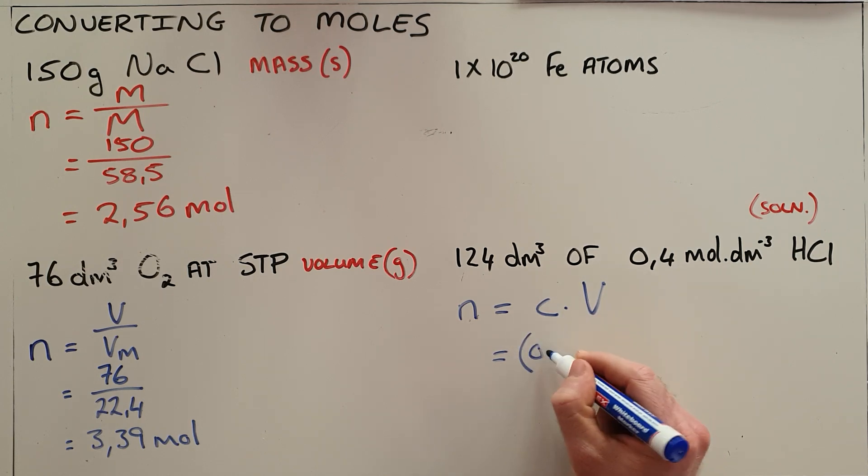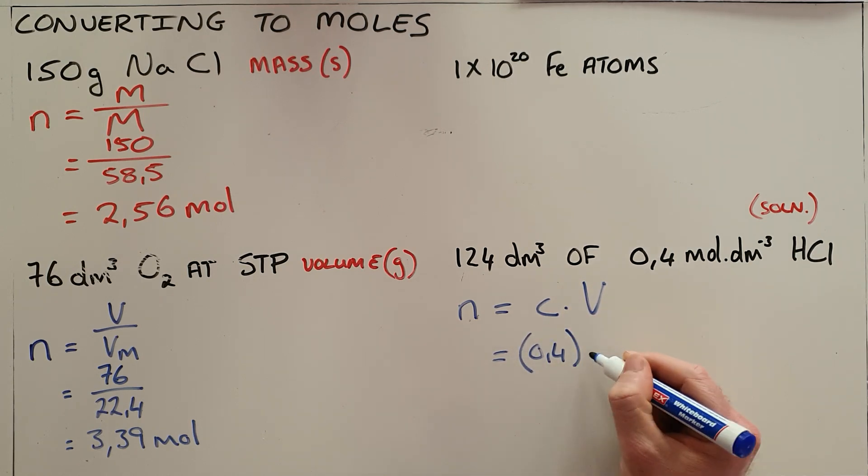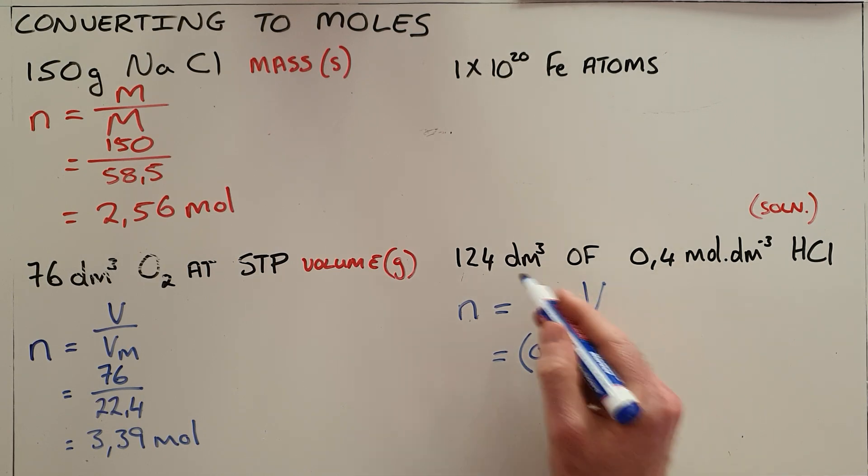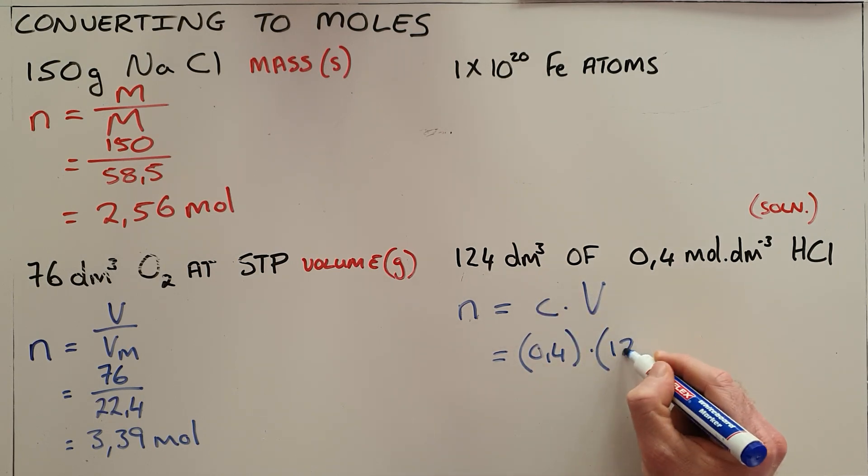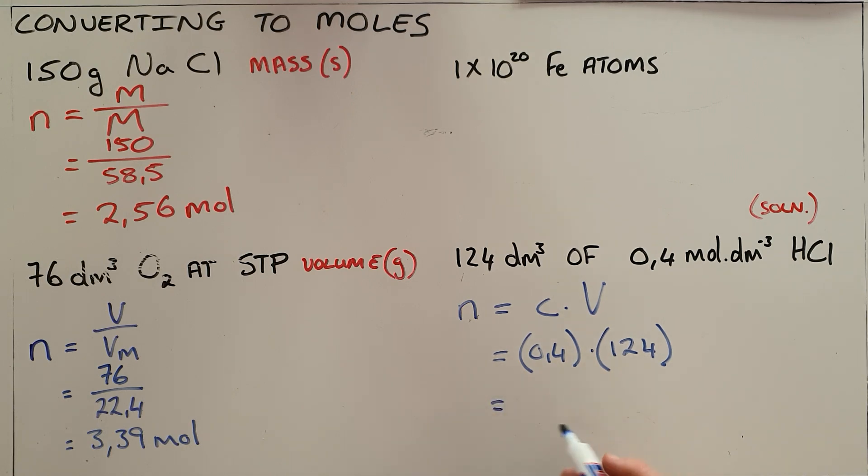Concentration is always measured in moles per cubic decimeter, 0.4, multiplied by the volume, always measured in cubic decimeters, 124. Therefore, our number of moles is 49.6, which basically tells us that in a 0.4 molar solution of hydrogen chloride that has a volume of 124 cubic decimeters, there are 49.6 moles of hydrogen chloride.